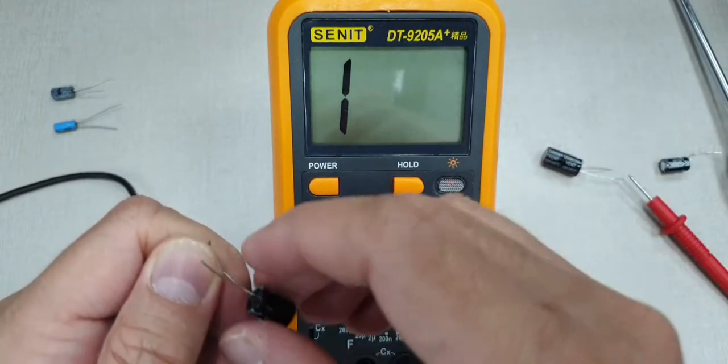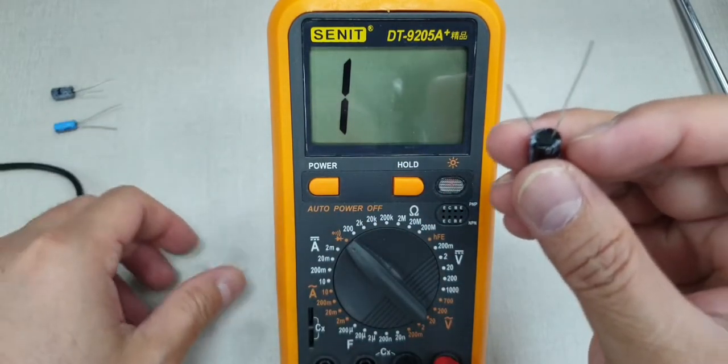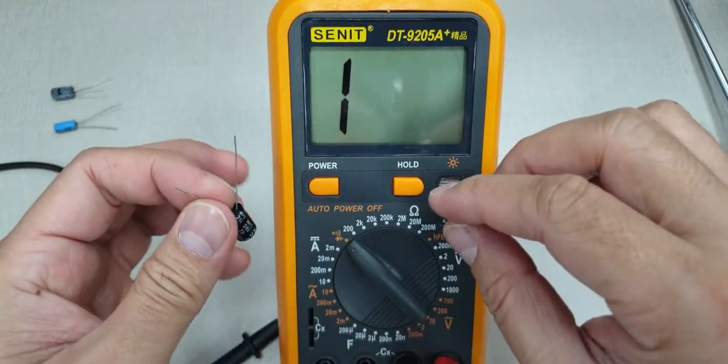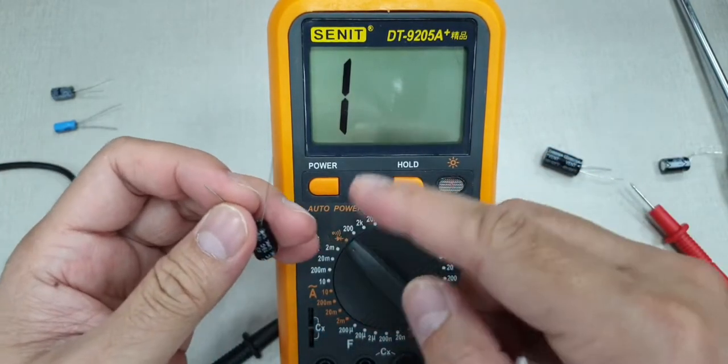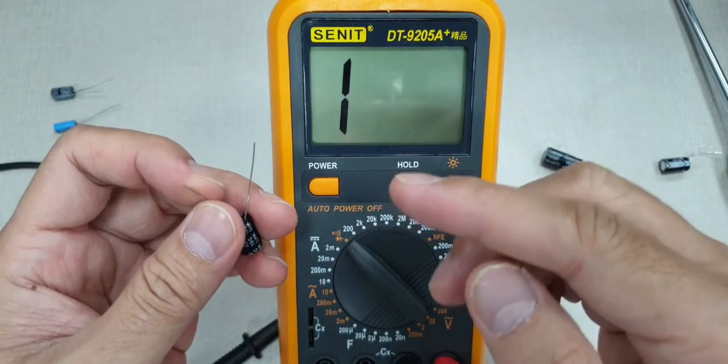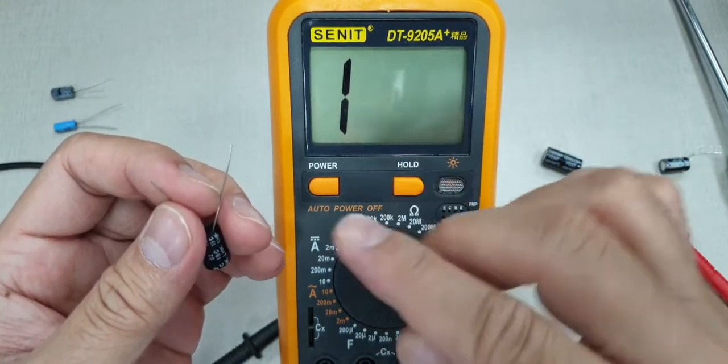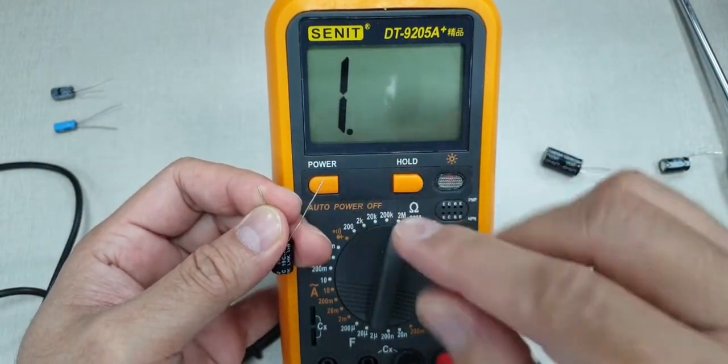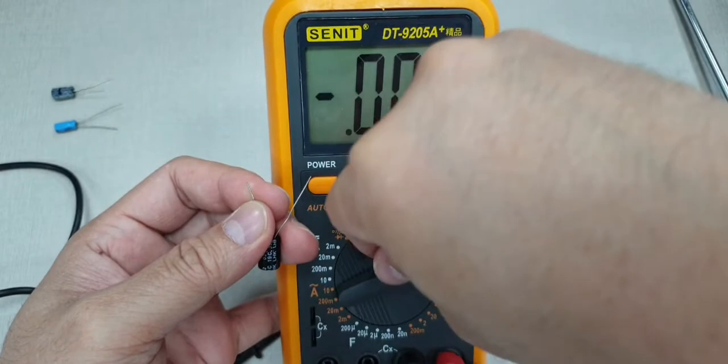So this thing is now charged. We'll see its discharging rate. As you can see, there was no fluctuation when it was charging, right? It was gradually charging. So the charging is okay. Now let's look at the discharging.